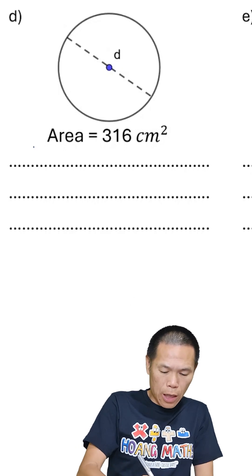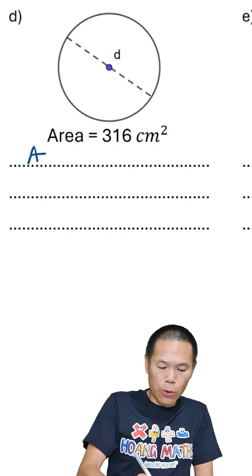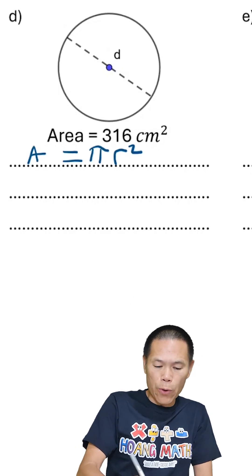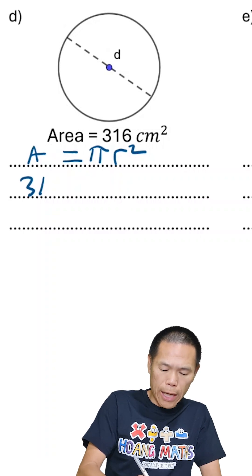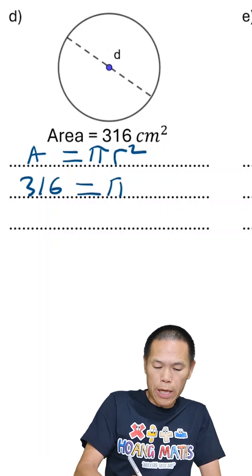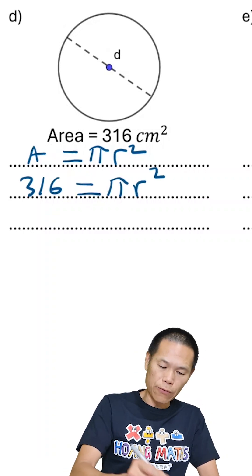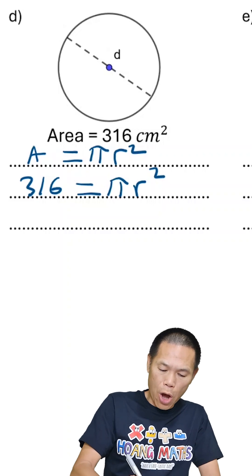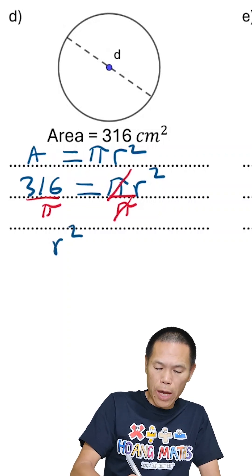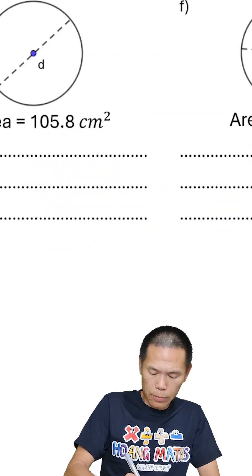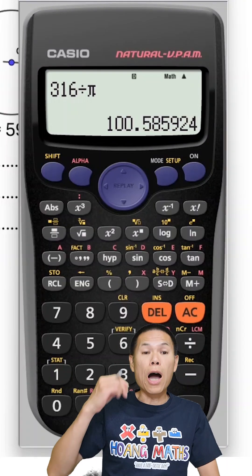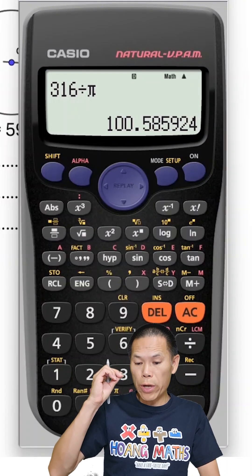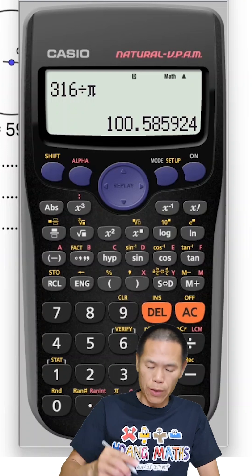We know that the area of a circle is πr². The area is 316, so 316 = πr². Dividing both sides by π gives r² = 316 divided by π, which is approximately 100.59.